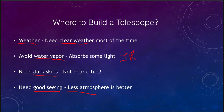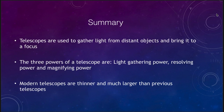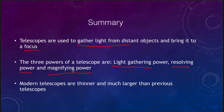Primary locations for modern telescopes include Hawaii, southern Arizona, and the desert mountains of Chile. To summarize: telescopes are used to gather light from distant objects and bring it to a focus. The three powers of a telescope are light gathering power, resolving power, and magnifying power — with magnifying power being the least important. Modern telescopes can be made much thinner and much larger than previously possible as technology has improved. That concludes our lecture on optical telescopes. We'll be back again next time for another topic in astronomy — have a great day, everyone.